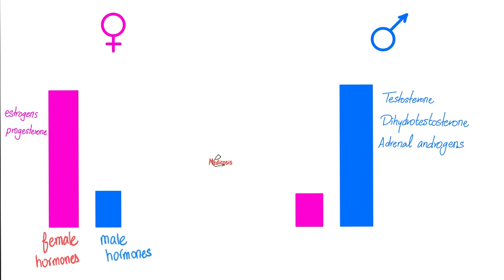Let me ask a question to make sure you've watched the previous videos: Is the adrenal androgen secreted from the adrenal cortex or the adrenal medulla? If you say the adrenal cortex, you are correct. Which part of the cortex? It's the zona reticularis.